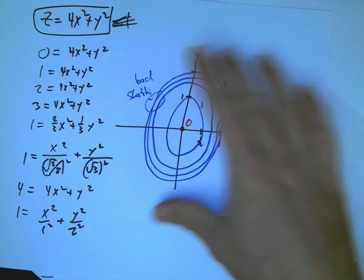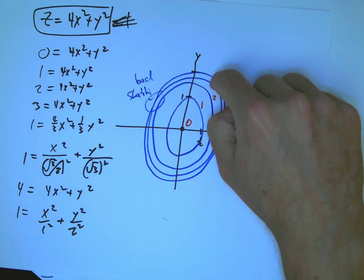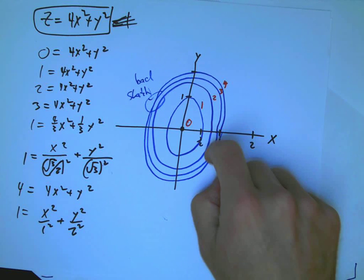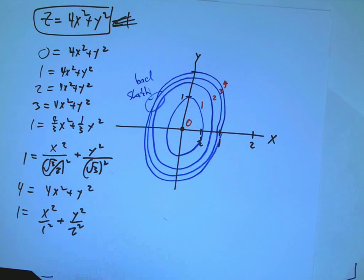And we know that if you want to look at how steep it is, which is going to be very interesting when we look at derivatives very soon, it's steeper where the contours are closer together. It's less steep where the contours are farther apart.